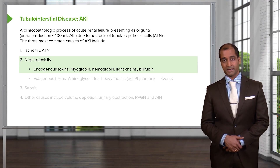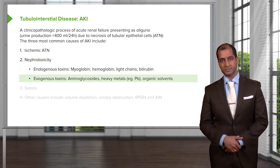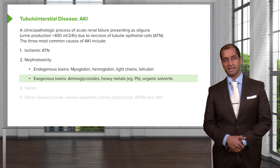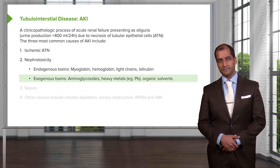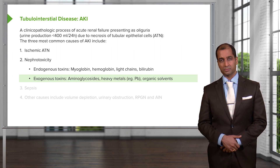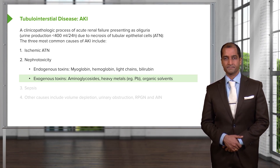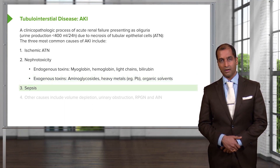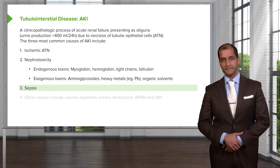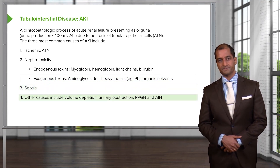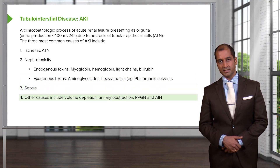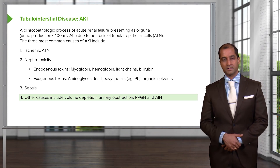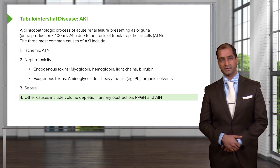Exogenous types of damage resulting in acute kidney injury include aminoglycosides — antibiotics notorious for requiring normal renal function to be confirmed prior to administration. Heavy metals such as lead poisoning result in lead nephropathy. Sepsis is always a concern for renal failure. Other causes include volume depletion, urinary obstruction, RPGN, and acute interstitial nephritis. Of all these etiologies of acute kidney injury, ischemic would be the most common.